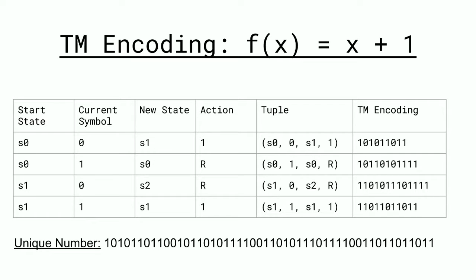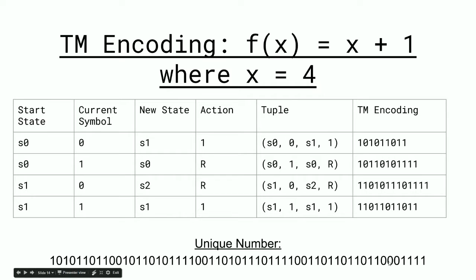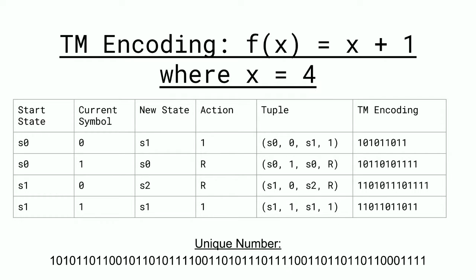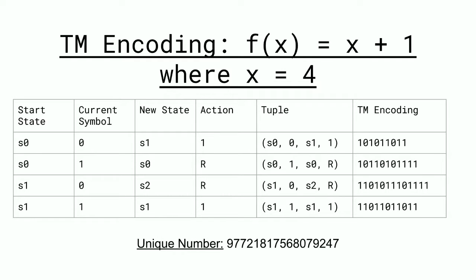We can encode each of these tuples into a unique number by separating each tuple by two 0s. We get a unique binary number, which we can write as an integer. We can also represent the input value by separating it with a block of three 0s, then appending the input value for x. In this case it's 4, giving us a unique number for solving x plus 1 where x equals 4. We can rewrite it for x equals 6 or x equals 10, or produce a unique number for x plus y or any other function.